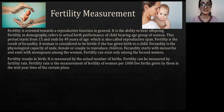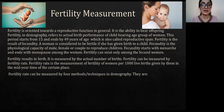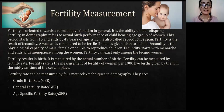Fertility rate is the measurement of fertility of women — the total live births given by them in the mid-year of a certain place. Fertility rate can be measured by four methods in demographics. The first is crude birth rate, second is general fertility rate, third is age-specific fertility rate, and the last is total fertility rate.